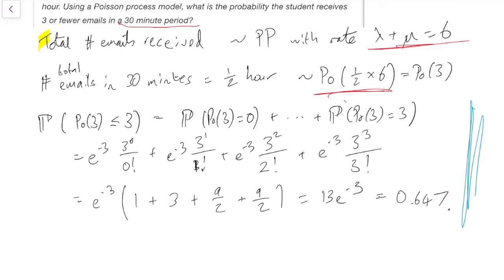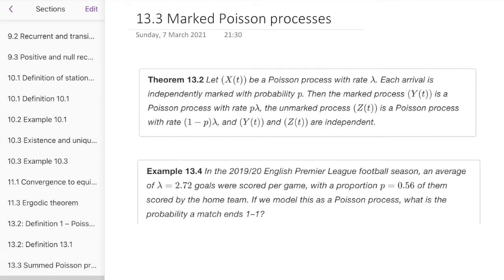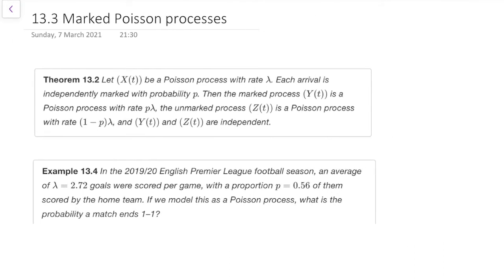Okay, and we said the opposite of adding two Poisson processes together into one was to split one Poisson process into two. And that's given by this theorem here. So let X(t) be a Poisson process with rate lambda, and independently mark each arrival with probability p. Then the marked processes, that is the arrival of the marked objects, is a Poisson process with rate p lambda. And the unmarked arrivals are a Poisson process with rate (1-p) lambda. And those two Poisson processes are independent.